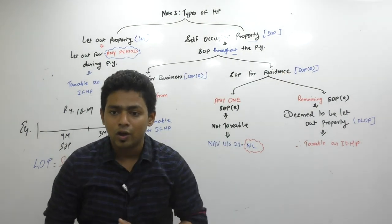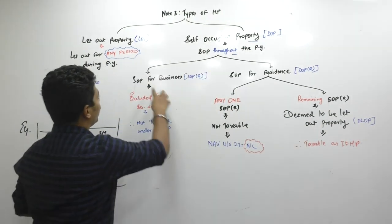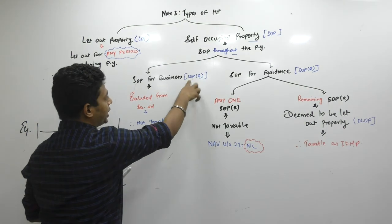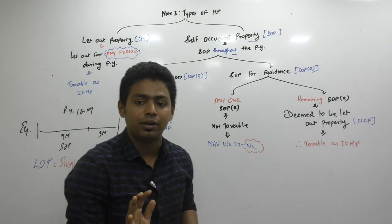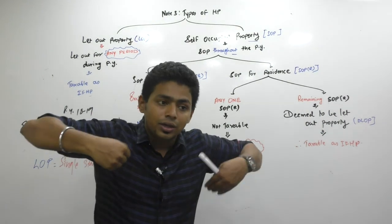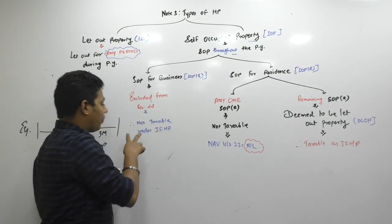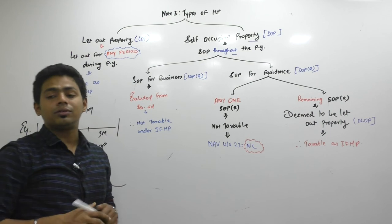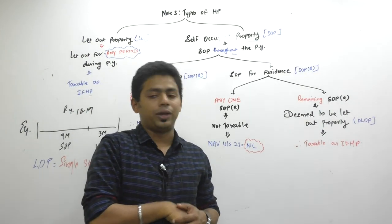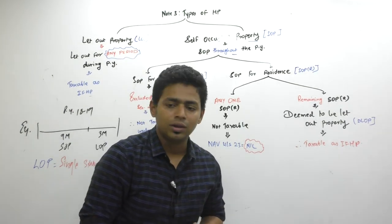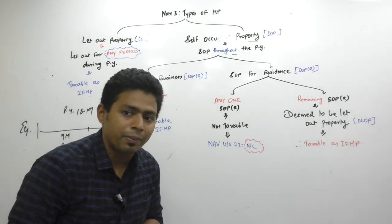PGBP is the appropriate head for taxation of business properties. And therefore, SOP for business is excluded — not exempted, not deducted — it is excluded from the charging section, and therefore not taxable under IFHP. It may become taxable under PGBP or IFOS, but it will not become taxable under IFHP for sure.